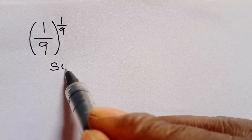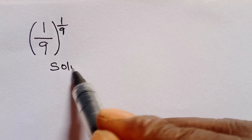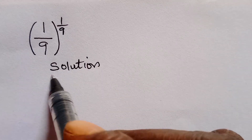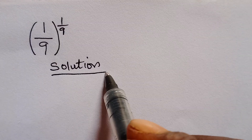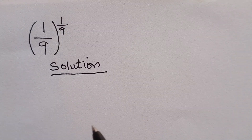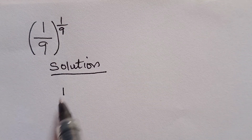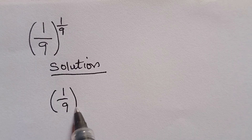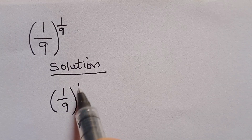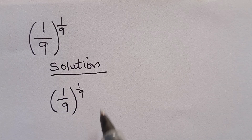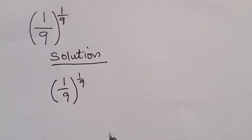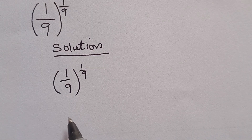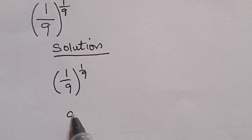Welcome, we have a solution. To solve this kind of mathematical problem is easy and straightforward. We have 1 divided by 9, everything raised to the power 1 divided by 9. Follow me to the end of this solution so that you'll be able to know how to solve this kind of problem.